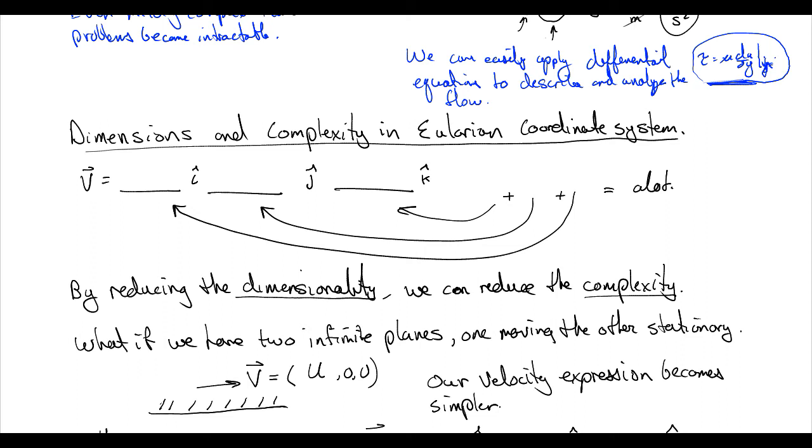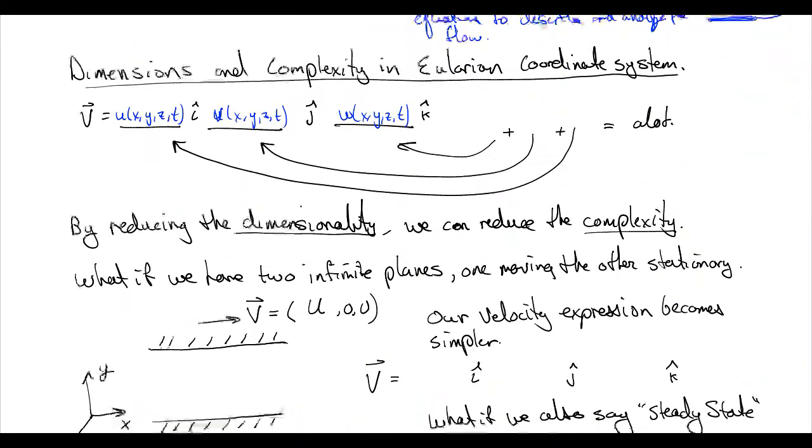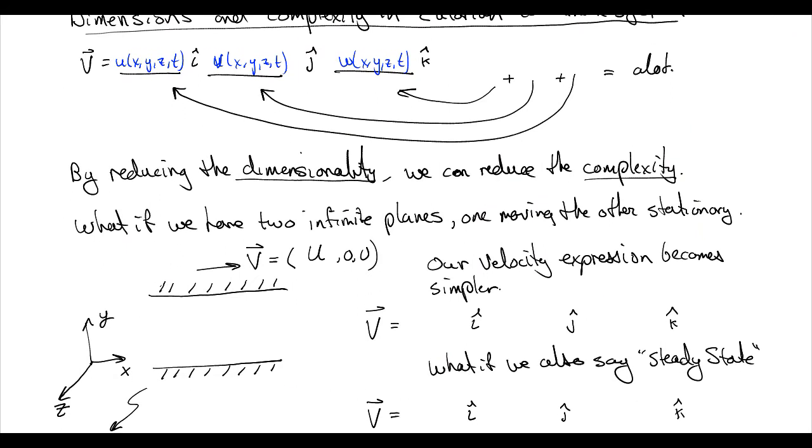Let's write out again what v is equal to. v is equal to u of x, y, z, and t, v is a function of x, y, z, and t, and w is a function of x, y, z, and t. You can imagine this gets complex quite quickly, but we can apply some tricks that reduce the dimensionality, and so we can reduce the complexity.